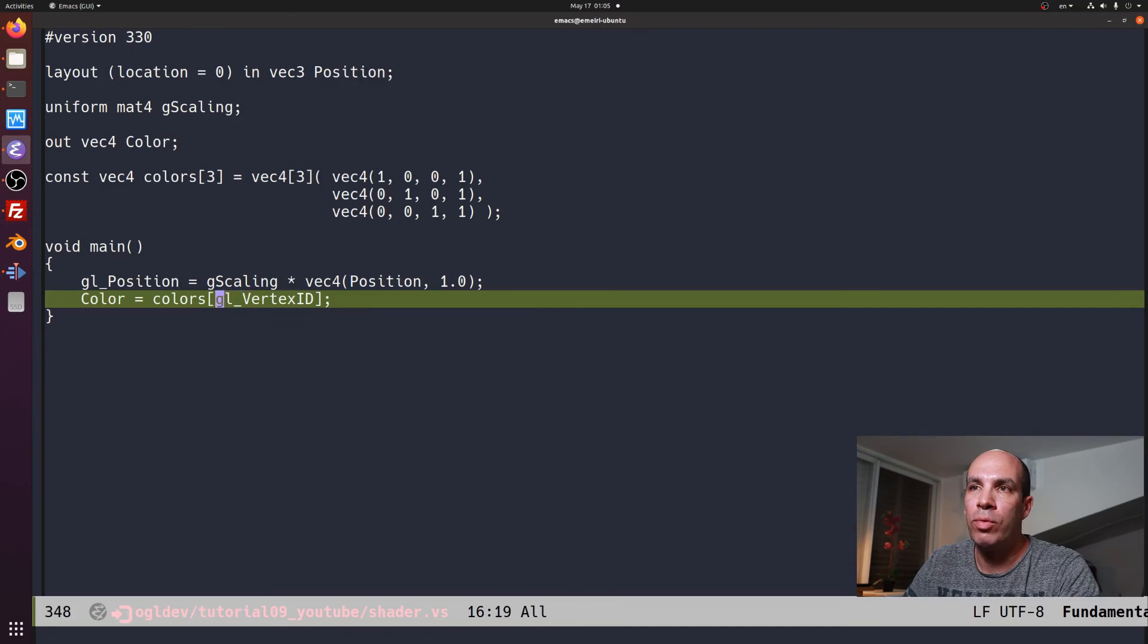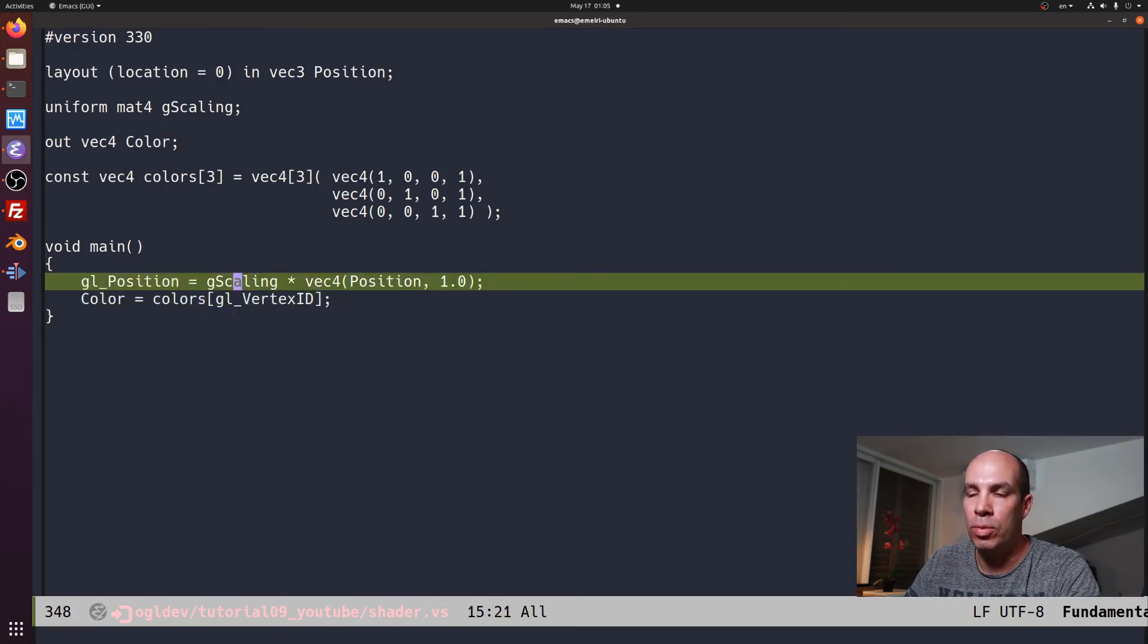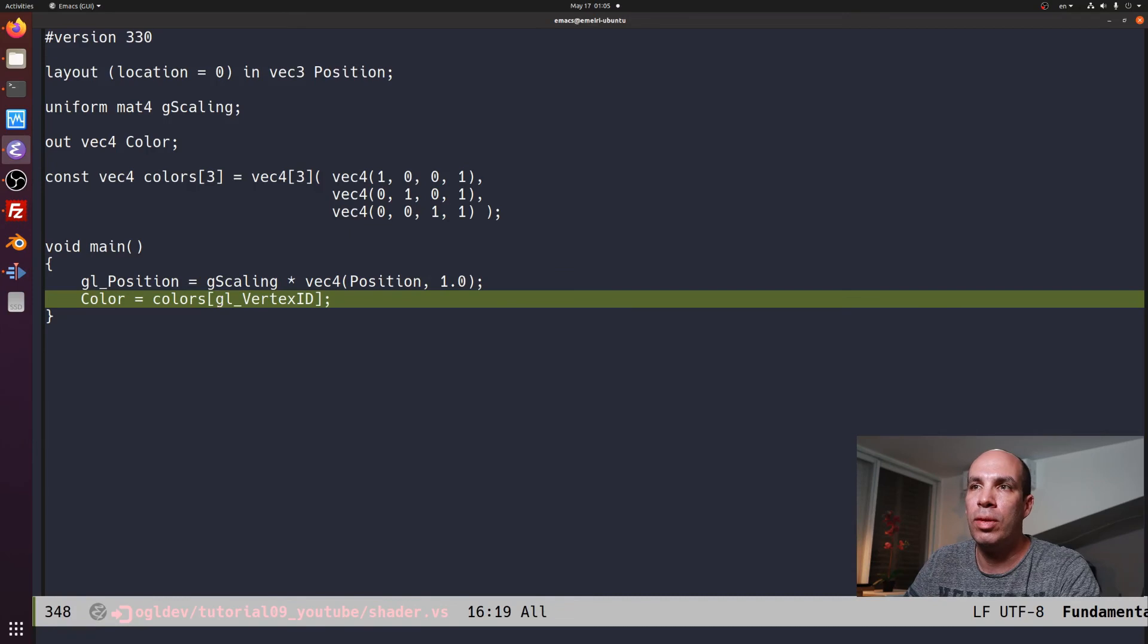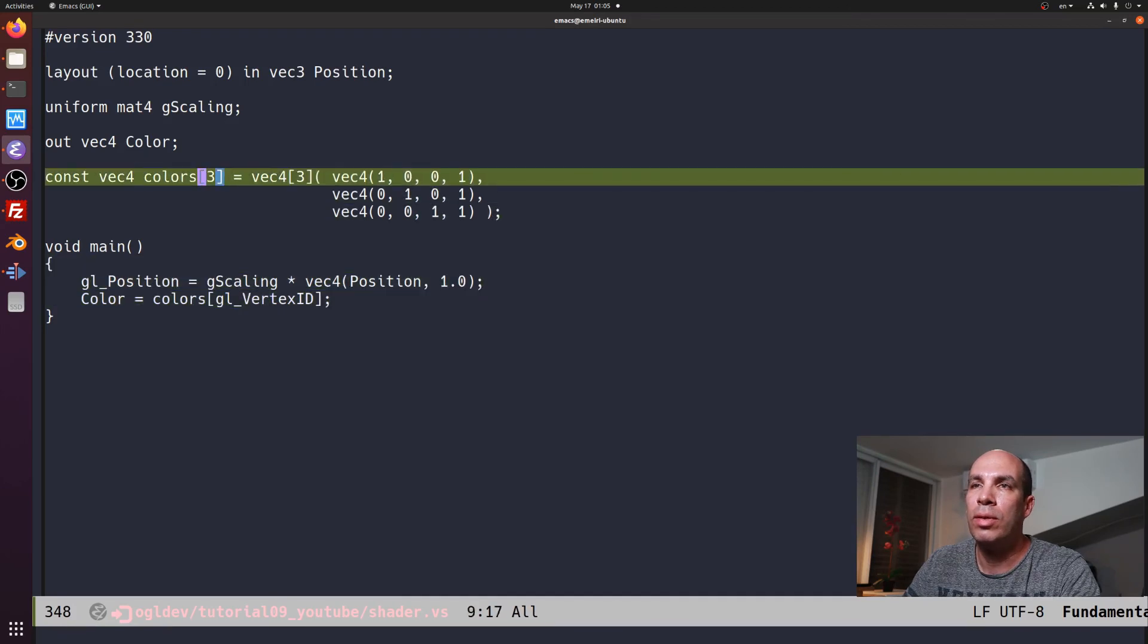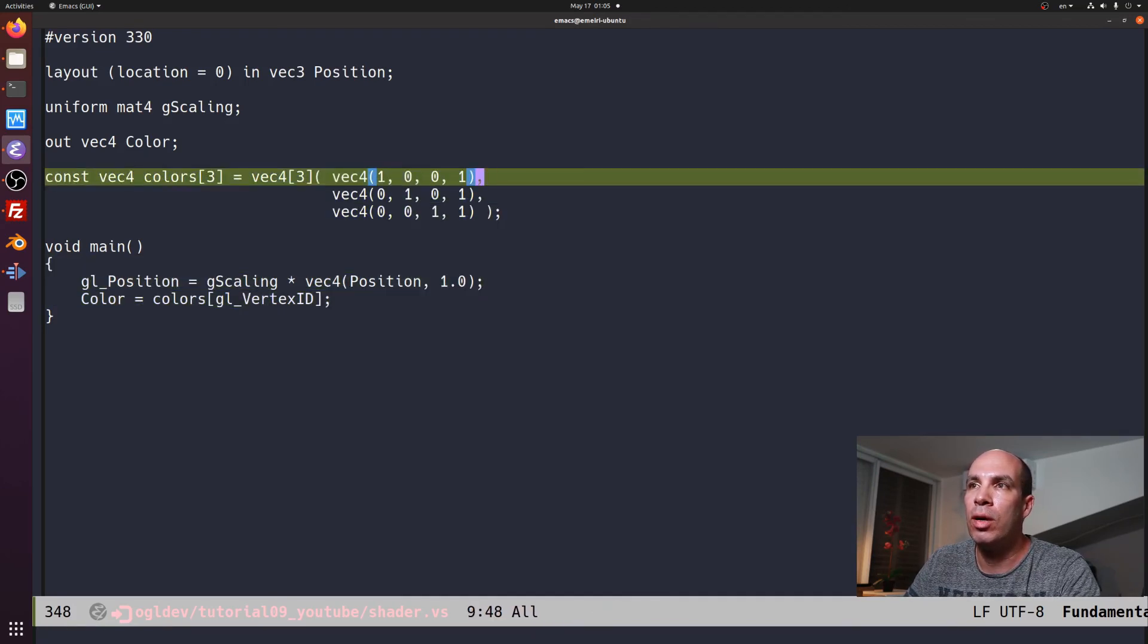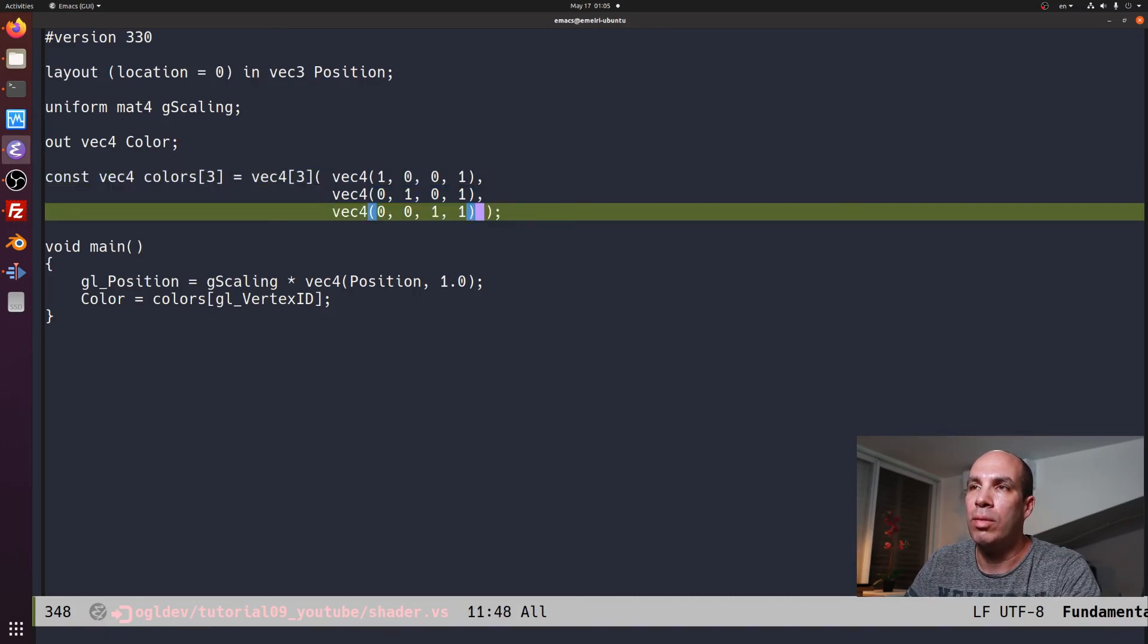Okay, so the GPU counts the number of vertices that have been processed so far, and for every one of them it provides the current index in this special system-generated variable called gl_VertexID. So we're already using internal variables, for example glPosition here in order to output the position, and in this case we're using the read-only variable glVertexID.